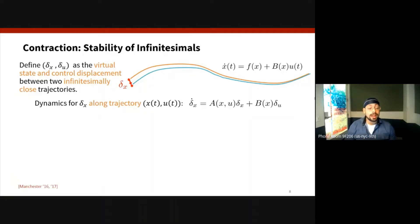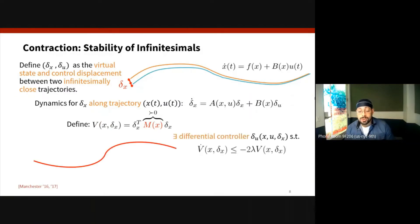So we can write down the dynamics for δx and it'll take this linear time-varying form, and now what contraction analysis is trying to do is to find a uniformly positive definite matrix-valued function M and an accompanying differential controller, where this differential controller is a map from the state, control, and state tangent space to the control tangent space. This differential controller ensures that the time derivative of this quadratic function in the variations satisfies an exponential stability property, namely that V̇ ≤ -2λV where λ is a constant and is termed as the contraction rate.